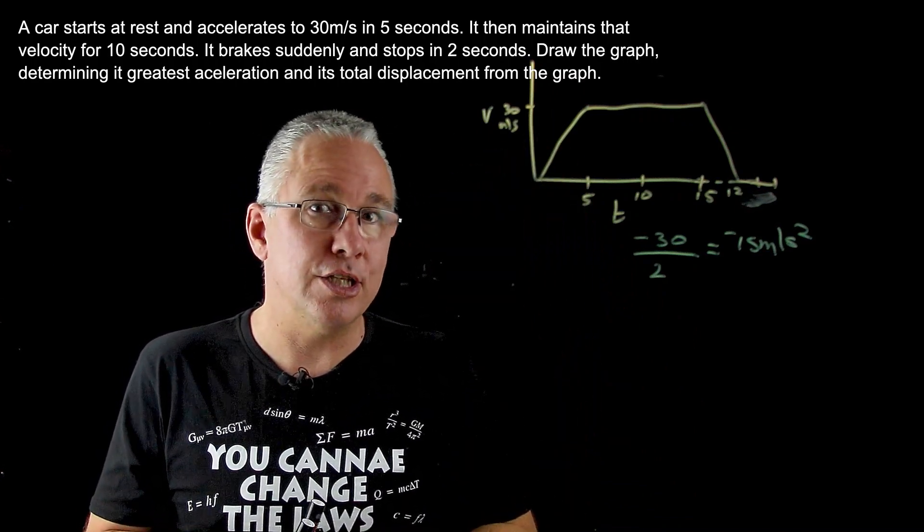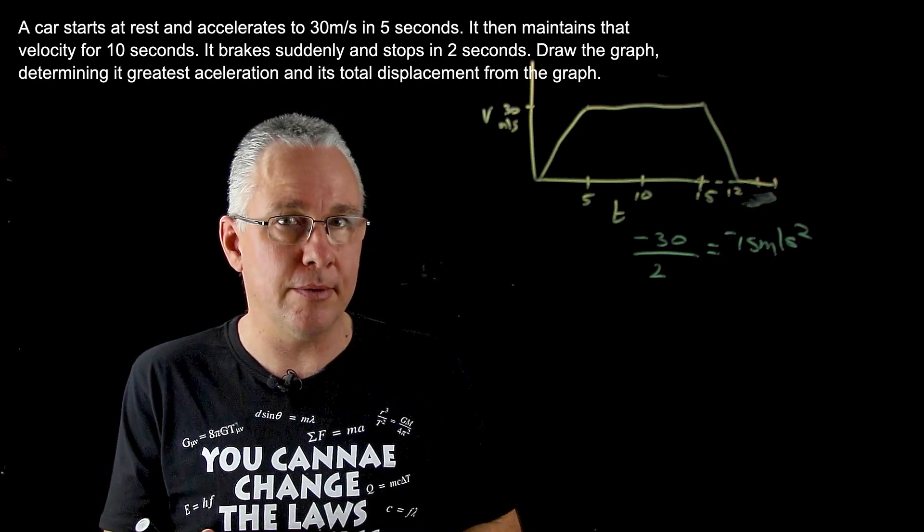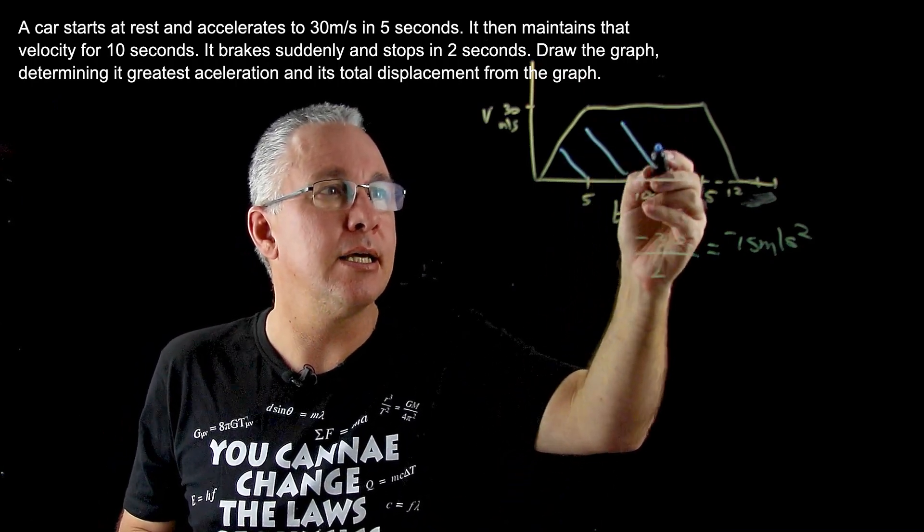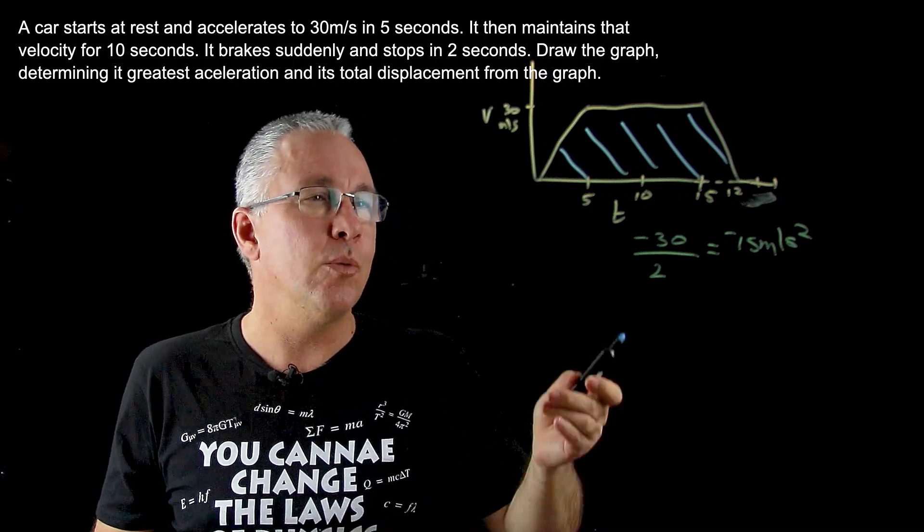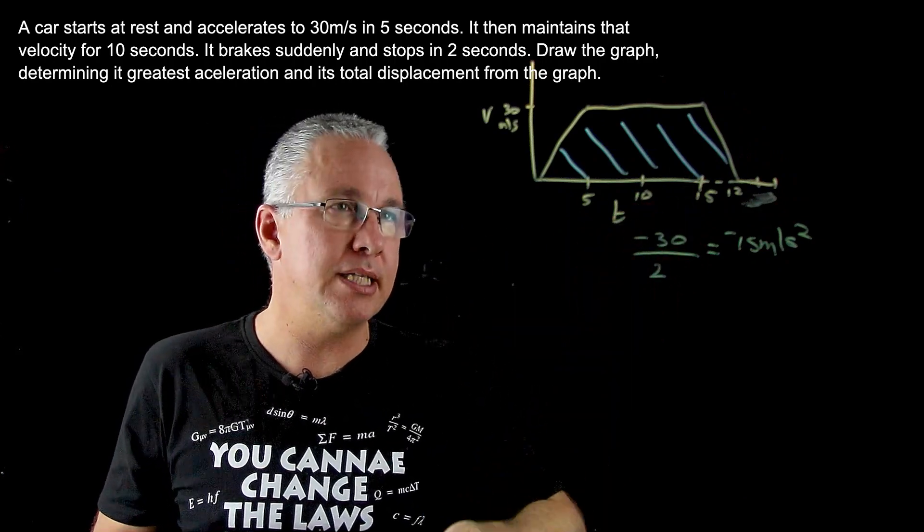Now what about the displacement? The displacement for a velocity-time graph is determined by the area underneath the graph. So we need this particular area. There's two ways we can look at this area: as a triangle, a rectangle, and a triangle, or we can see this as a trapezium. That's the way I'm going to do it.